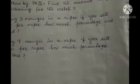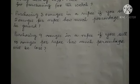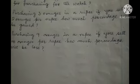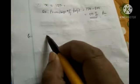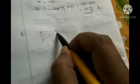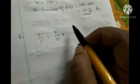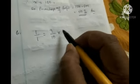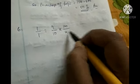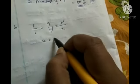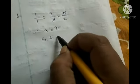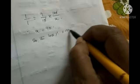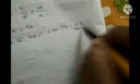Problem 6: Purchasing 9 oranges for a rupee and selling 10 oranges for a rupee — how much percentage will be lost? Using the same formula: 1 by 1 equals 9 divided by 10 into 100 divided by loss percentage x. After calculation, x equals 90. Loss percent equals 100 minus 90, which is 10%. The answer is 10% loss.